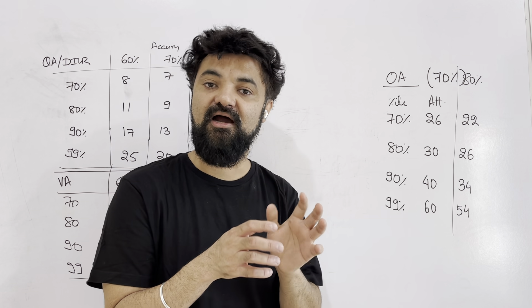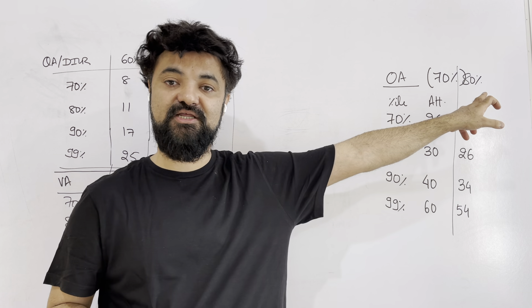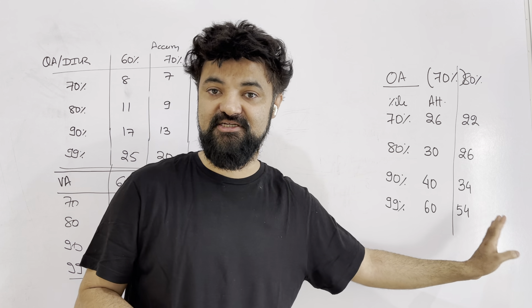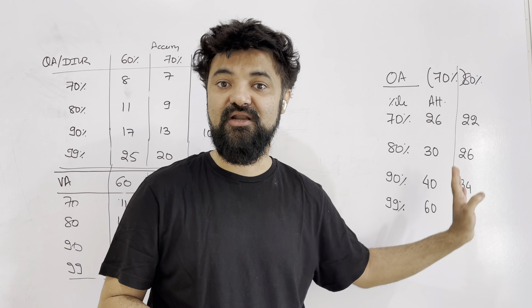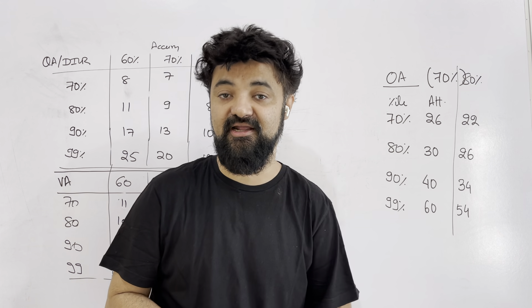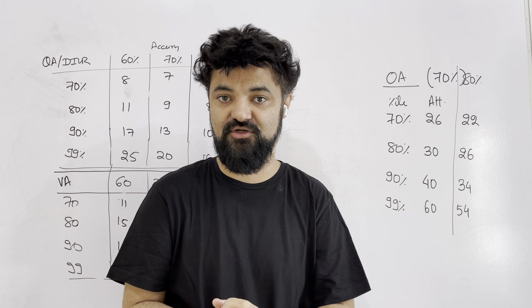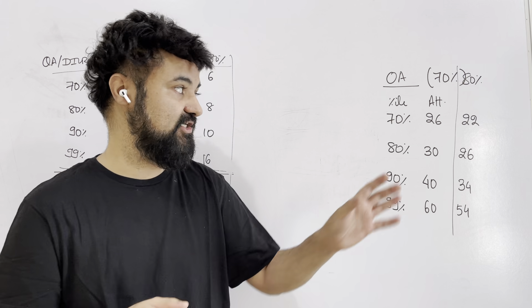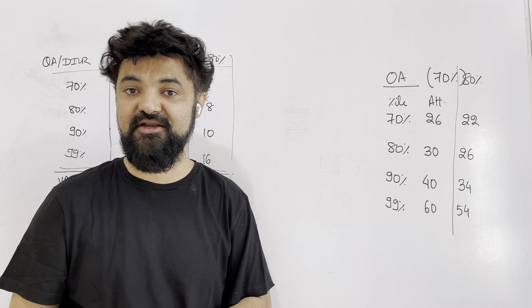So this is the attempts and then 80 percent is your accuracy, then 22, 26, 34, 54, can you see the difference, if you build up your accuracy, you can see the attempts going down drastically and that's what exactly I wanted to focus on because if you reduce your attempts, if you improve your accuracy, your attempts automatically get reduced as per that.